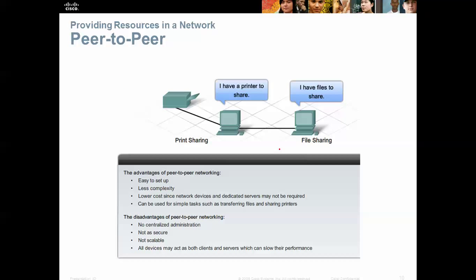There are also different types of networking. We are probably most familiar with peer-to-peer, which simply means two or more devices sharing with each other without a server involved. For example, a PC with a printer attached can share that printer, and another PC can print through it. You can have one-to-one or one sharing to many devices. There are advantages and disadvantages to peer-to-peer, and it's typically used for smaller, simpler networking scenarios.